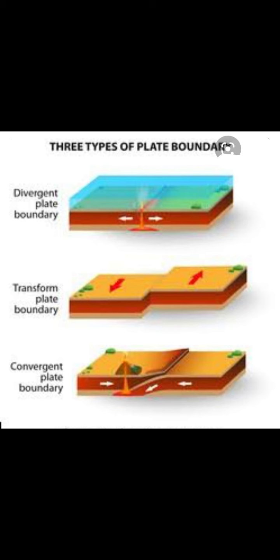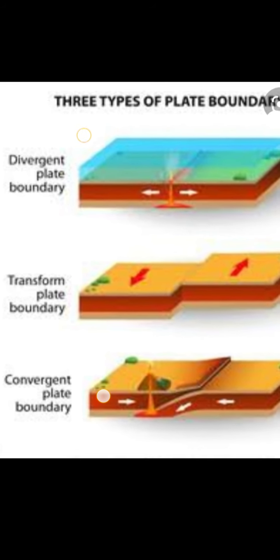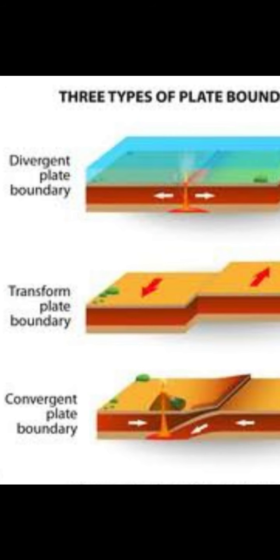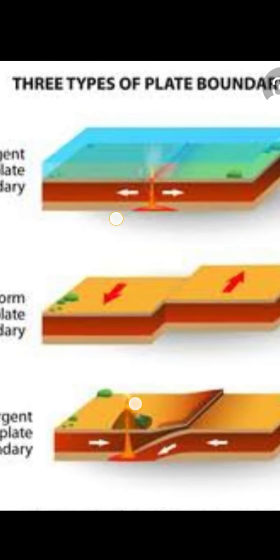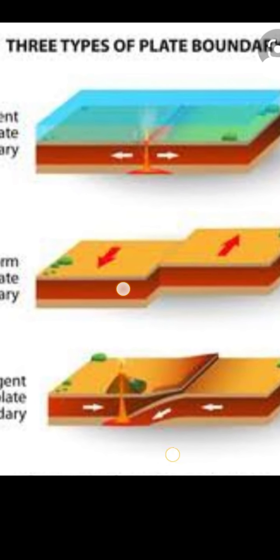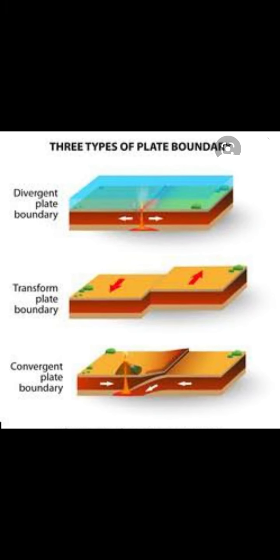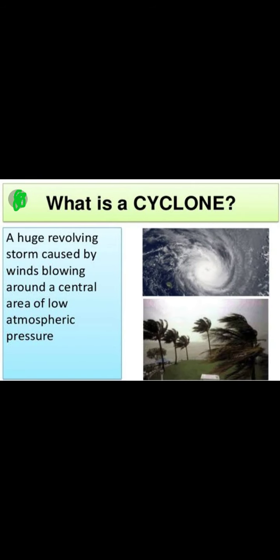Discussing volcanoes and earthquakes, we find that in the earth there are three types of plate movements. First, convergent — plates come together; second, divergent — they move far from each other; third, transform — they strike against each other. These three movements of earth's plates cause earthquakes. The impacts include destruction of homes, casualties, and human deaths. Safety measures: drop, cover, and hold on.